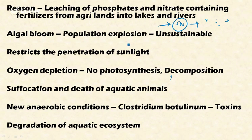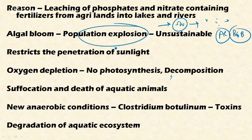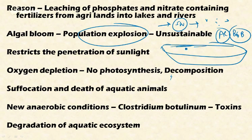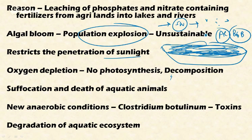This addition of nutrients results in unsustainable growth of plant-based organisms — algae and blue-green bacteria — which undergo a population explosion due to nutrient enrichment of the water. The algal blooms reach an unsustainable proportion and cover the entire top layer of the water body. This population explosion and harmful algal bloom on the surface restricts the penetration of sunlight into the deeper layers due to the opaqueness caused by the algal growth.